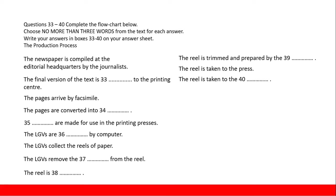For example, the production process: 'The newspaper is compiled at the editorial headquarters by the journalist. The final version of the text is dashed to the printing center.' In the paragraph, 'final version' and 'text' will not be used directly — we look for synonyms. We see the final version is transmitted to the printing center, not the pre-press center. Pre-press center and printing center are not the same place.